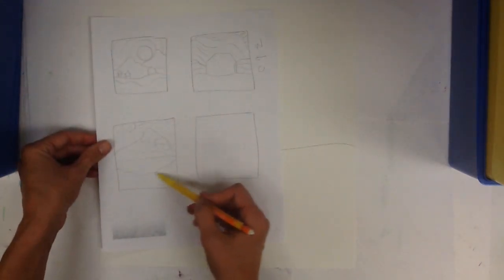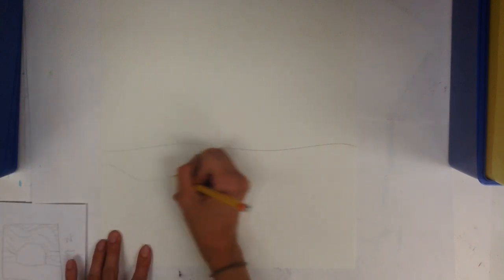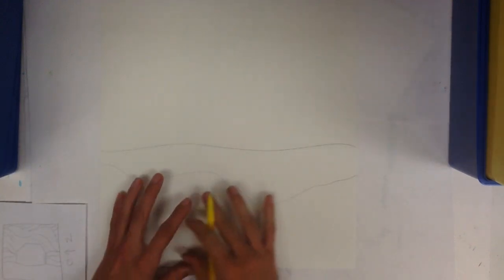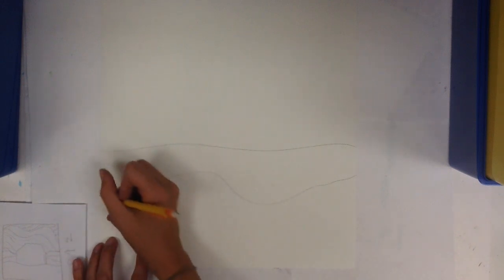So then I'm going to look at my sketch. I'm going to do some lines that are kind of going downward. So this is the snow in my picture.